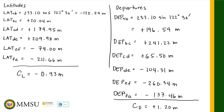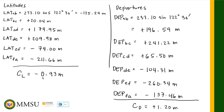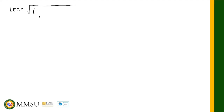Now we can compute the linear error of closure. LEC = √(CL² + CD²) = √((−0.93)² + (1.20)²). Our linear error of closure is therefore equal to 1.52 meters.